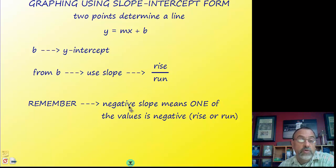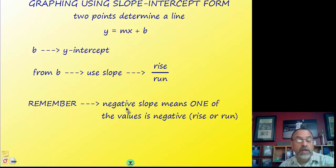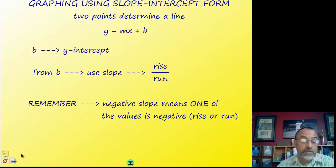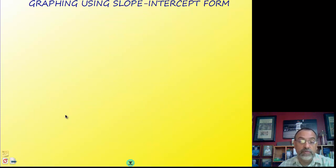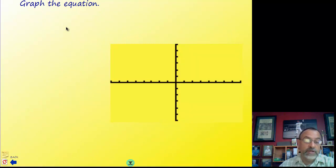For a negative slope, one of the values — either the rise or the run — needs to be negative. You can go up and then left (positive, negative) or down and then right (negative, positive), as long as one of them is negative. Remember: negative slopes go down from left to right, positive slopes go up from left to right.